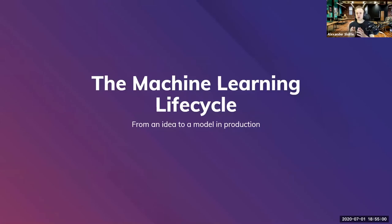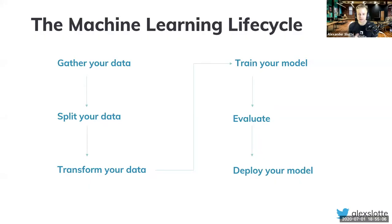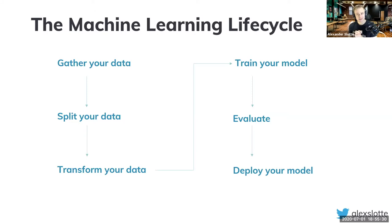So how do we train a model? The machine learning lifecycle is this — if there's any slide you should take away from this talk, it's this one. These are the general steps you need to do to train a machine learning model: gather your data, split your data, transform your data, train your model, evaluate your model, and deploy to production. I want to dive into each one and understand what it means. This is the common theme to go through a model training process.